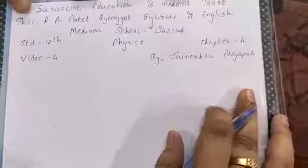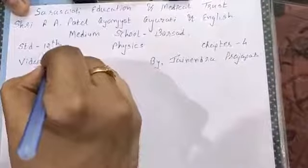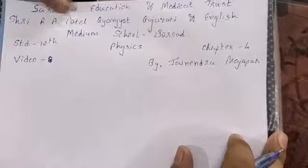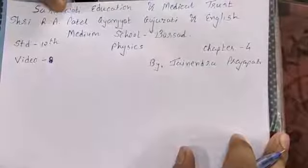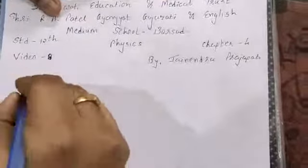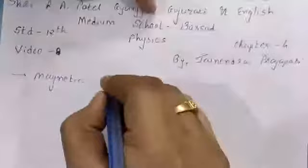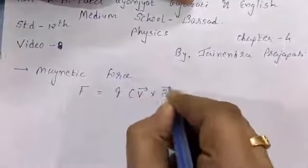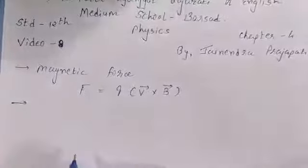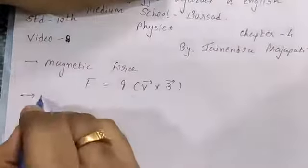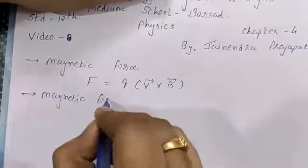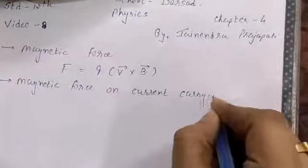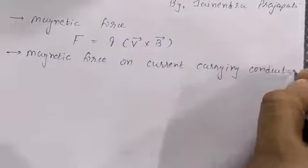Hi everyone, this is video number 8 of chapter number 4, 12th physics. In video number 7, we have seen the magnetic force on a moving charge with velocity V, and that was Q V cross B.